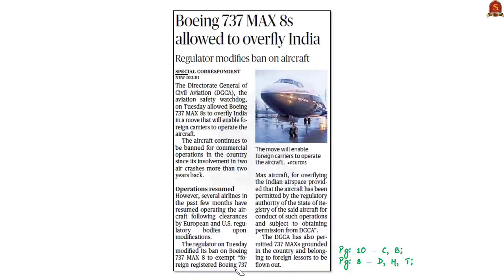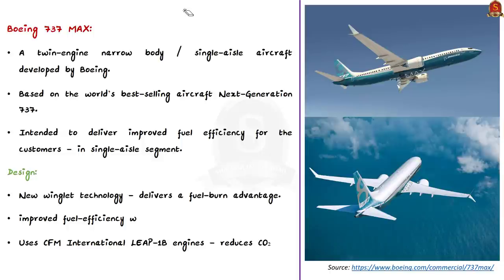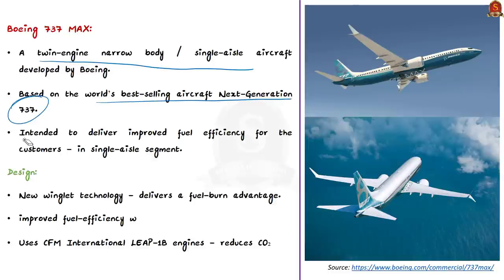Now let us take up the news article about the Directorate General of Civil Aviation (DGCA) allowing the Boeing 737 MAX 8s to overfly India — a move that will enable foreign carriers to operate the aircraft. The Boeing 737 MAX is a new family of twin-engine narrow-body single-aisle aircraft developed by Boeing, based on the world's best-selling next-generation 737. The new range is intended to deliver improved fuel efficiency, incorporating new winglet technology with a fuel burn advantage and an 8% per seat efficiency advantage over other aircraft in the single-aisle segment.